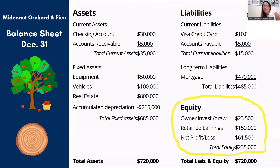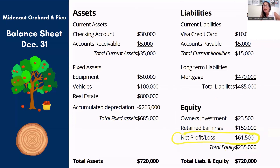The second major equity line is retained earnings — the accumulated profit over time that's still in the business. Finally, you'll see a net profit and loss number in the equity section of the balance sheet, and that is actually the same number that's on your profit and loss statement. So the big reveal here is that your balance sheet is showing you every single thing about your business. The net profit and loss is summarized there; the income statement is essentially a sub-report to the balance sheet, which is one reason this report is so powerful.